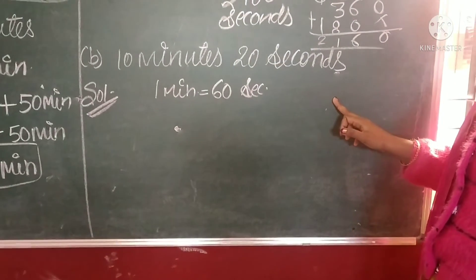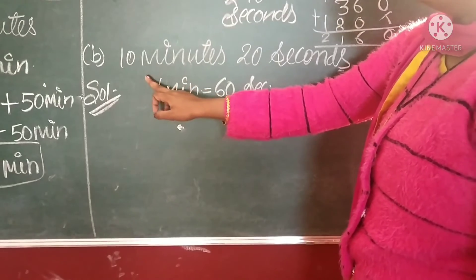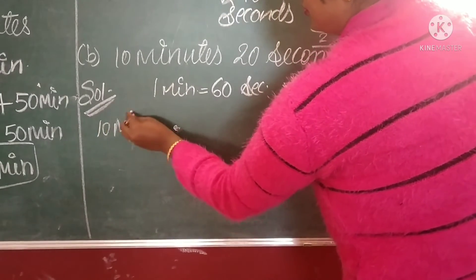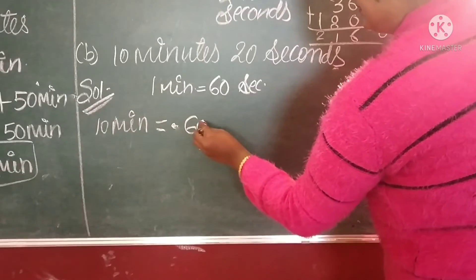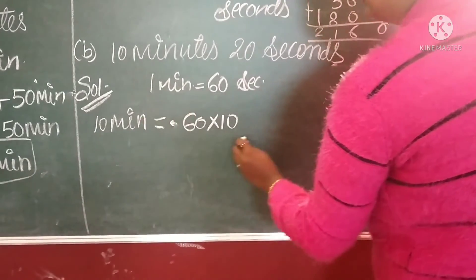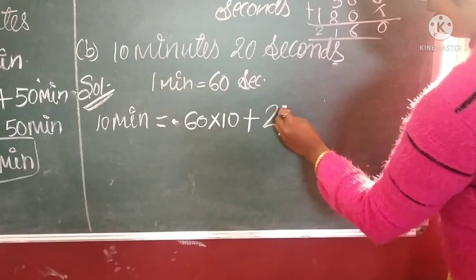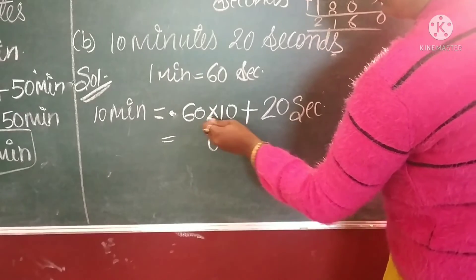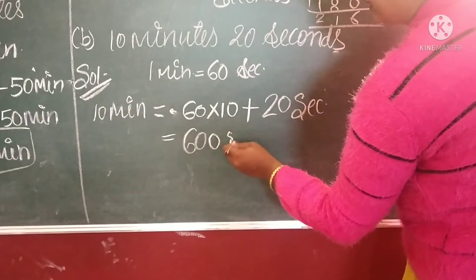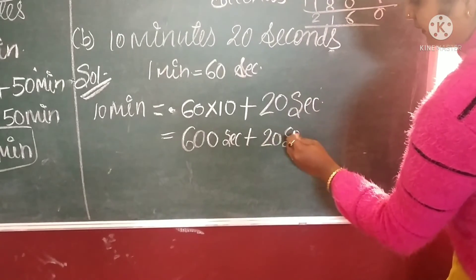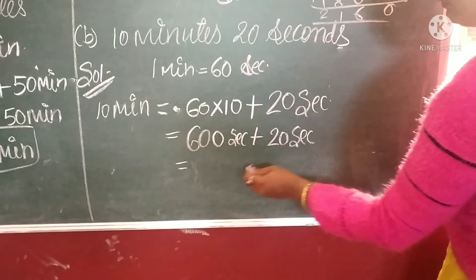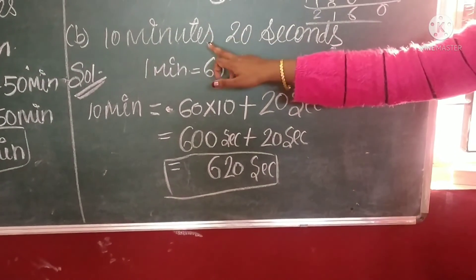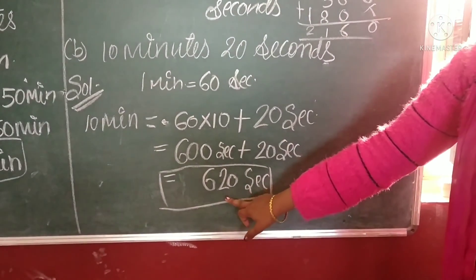Next: 10 minutes 20 seconds. 20 is already in seconds, so we only convert 10 minutes. 1 minute equals to 60 seconds, so 10 minutes equals to 60 multiplied by 10, which is 600 seconds, plus 20 already in seconds. 600 plus 20 gives us 620 seconds. So in 10 minutes 20 seconds, we have 620 seconds.